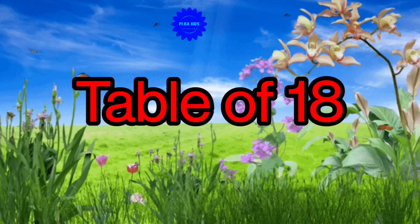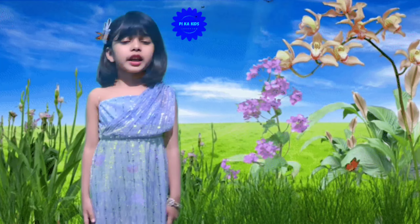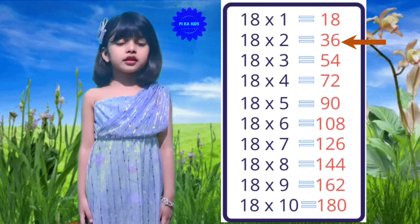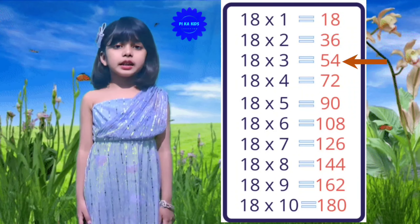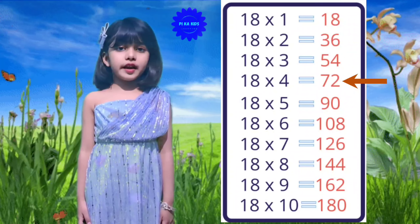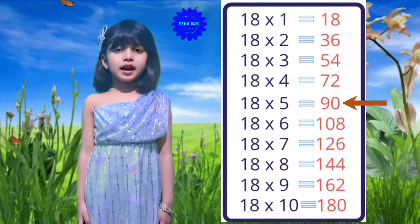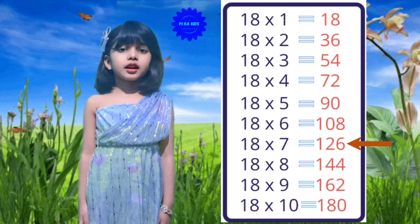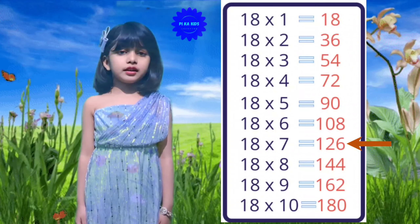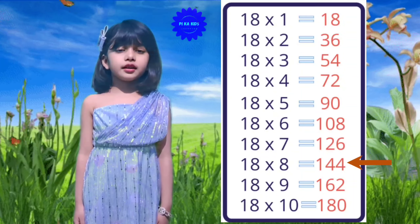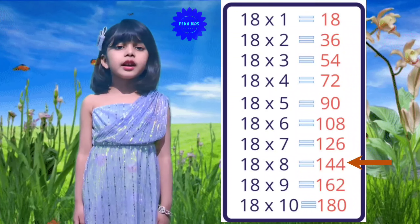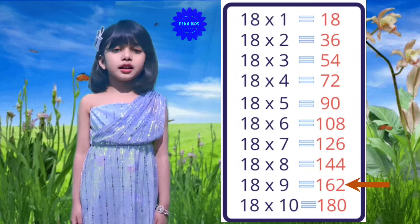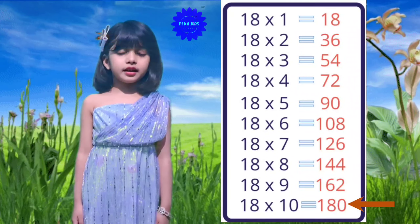Table of 18: 18 ones are 18, 18 twos are 36, 18 threes are 54, 18 fours are 72, 18 fives are 90, 18 sixes are 108, 18 sevens are 126, 18 eights are 144, 18 nines are 162, 18 tens are 180.